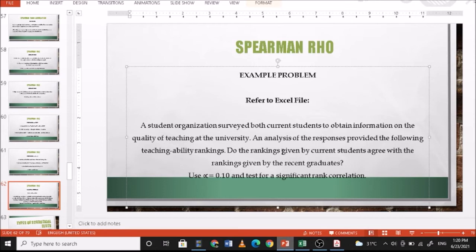H0: There is no difference between the ranking of current students and rankings of recent graduates. For the alternative: There is a difference between rankings of current graduates and recent graduates. Our alpha level of significance is 0.10. The statistic to be used is Spearman Rho because this is ordinal—both datasets are ordinal for current students and recent graduates. We will reject the null hypothesis if your p-value is less than 0.10.